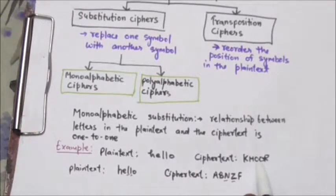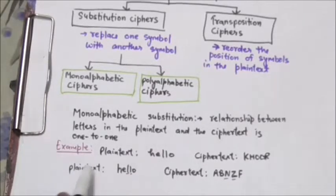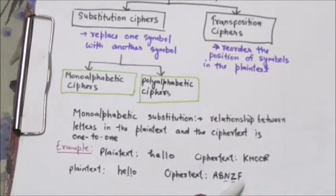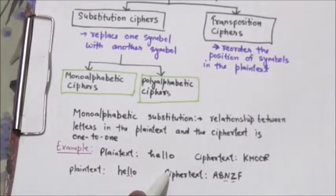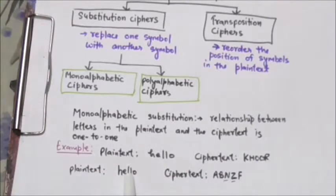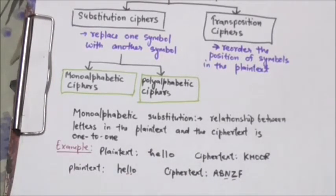Here is another example: the plain text H E L L O has a corresponding cipher text A B N Z F. This cipher is not mono alphabetic because each L is encrypted by a different character — the first L is encrypted by N and the second L is encrypted by Z.